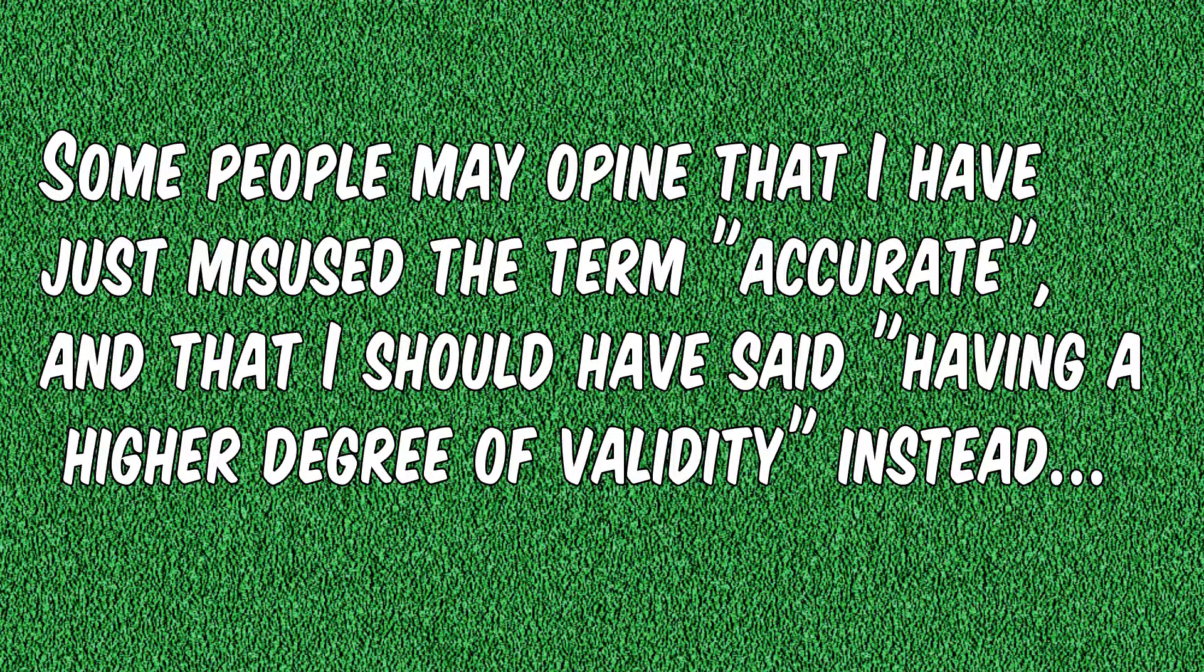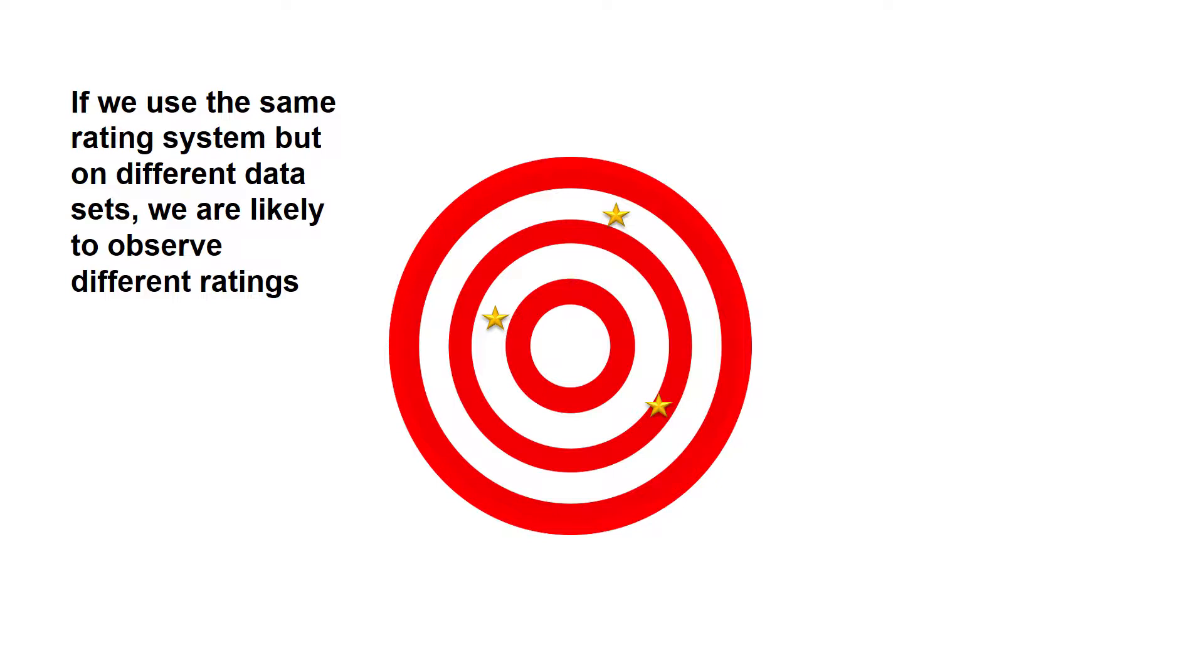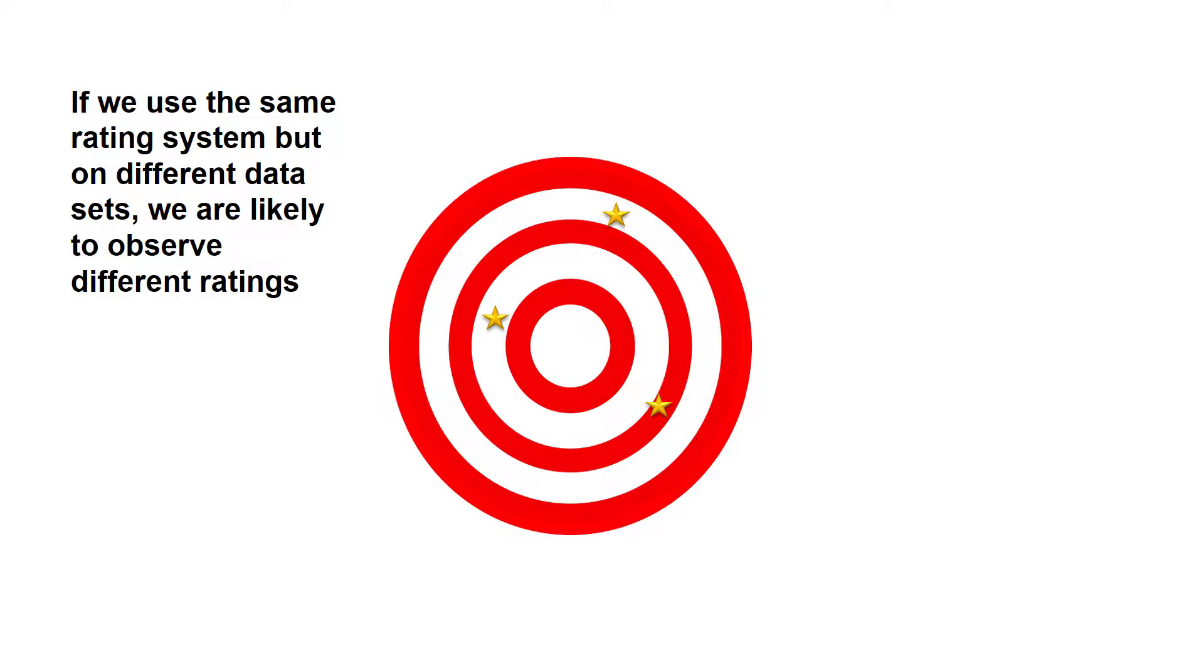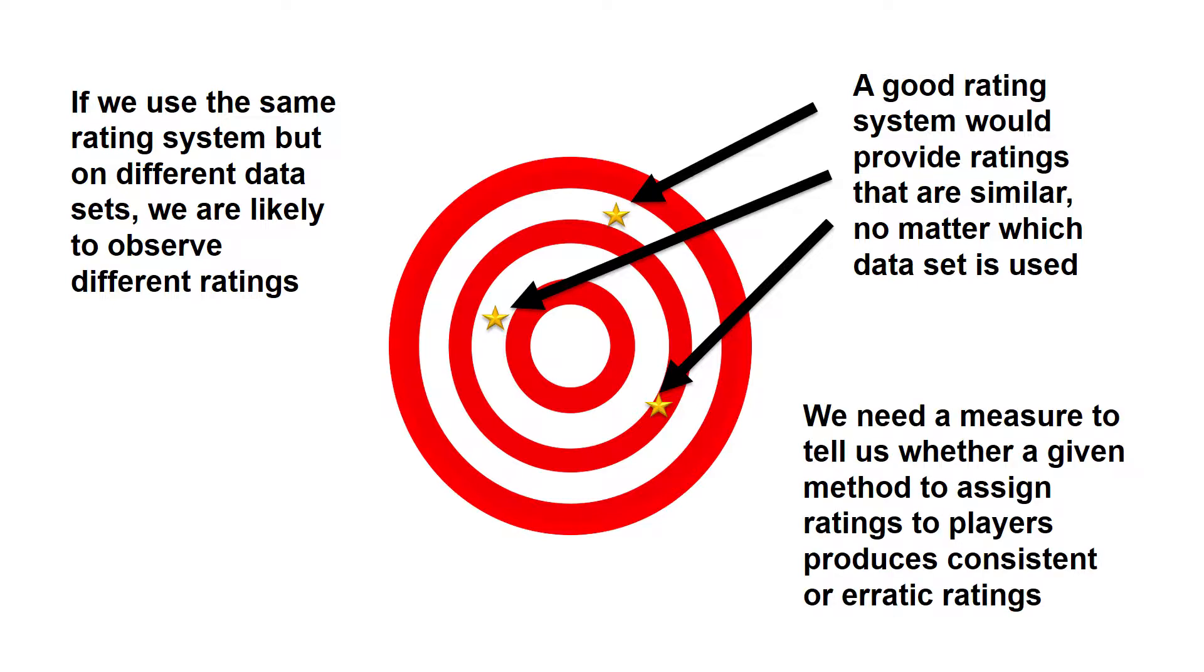Our rating systems are based on using a large set of data consisting of observed football matches. If we use the same rating system but use different data, the ratings produced will be different. They will therefore correspond to different points on our target. In general, a good rating system will tend to produce ratings that are similar, independent of which matches are actually included in the dataset. To evaluate rating systems, we therefore would like some method to measure which of two rating systems produce ratings that are more precise.